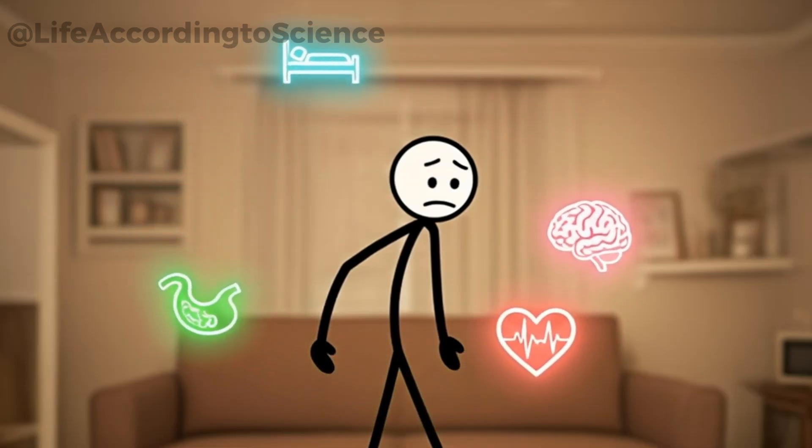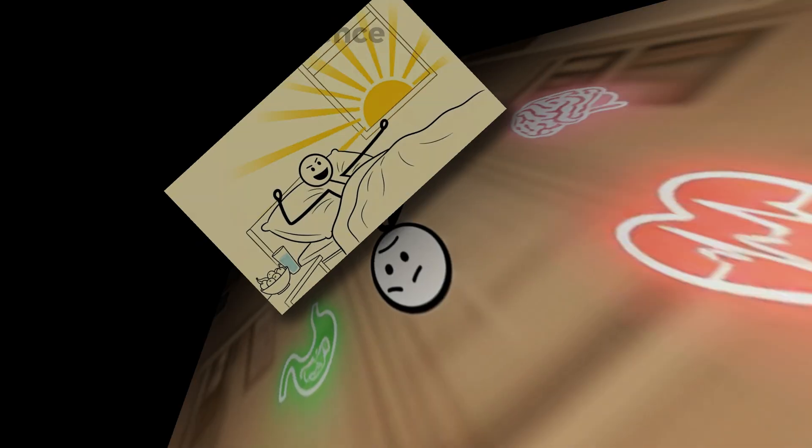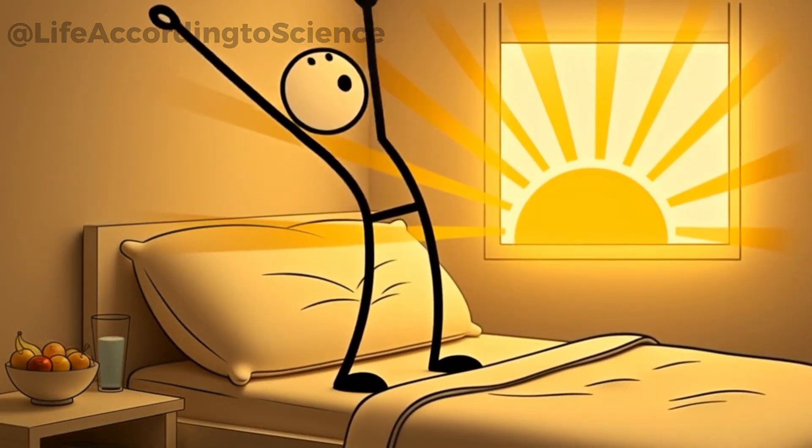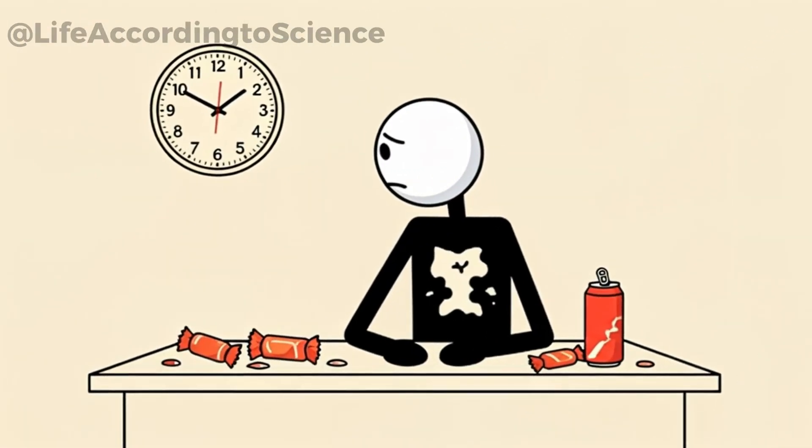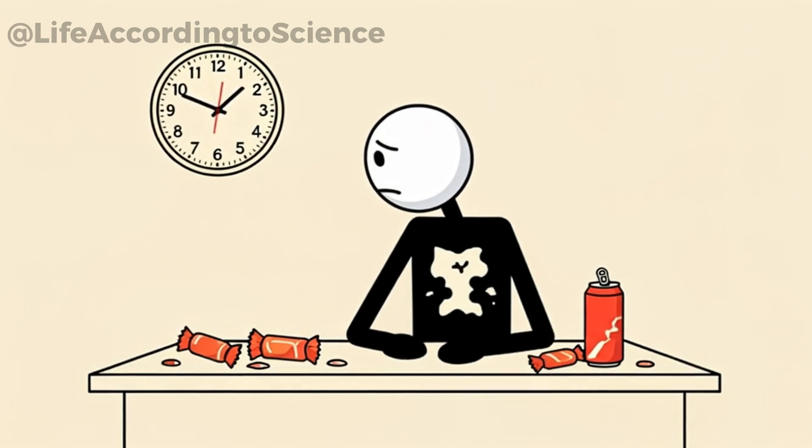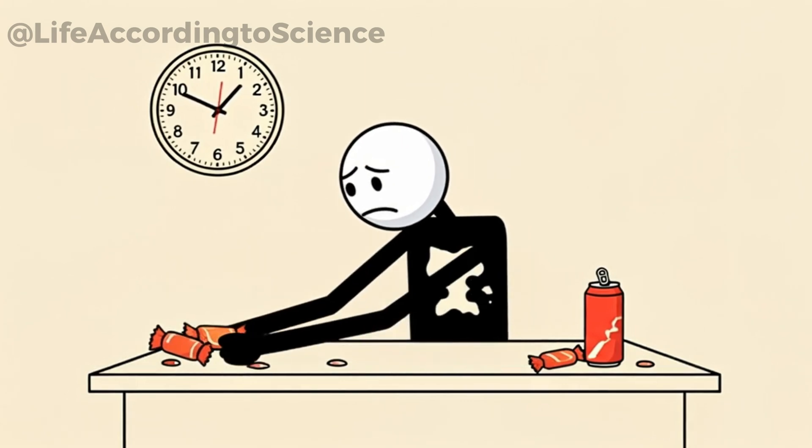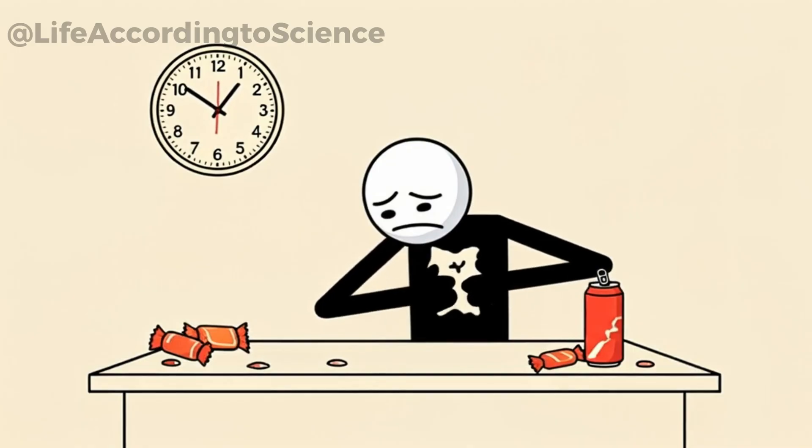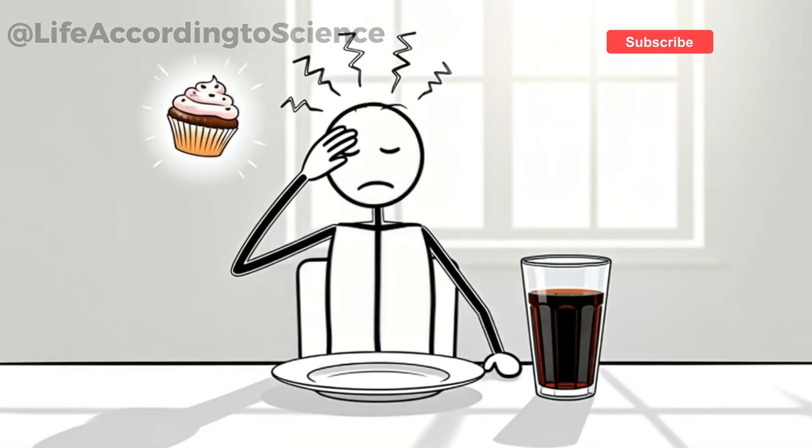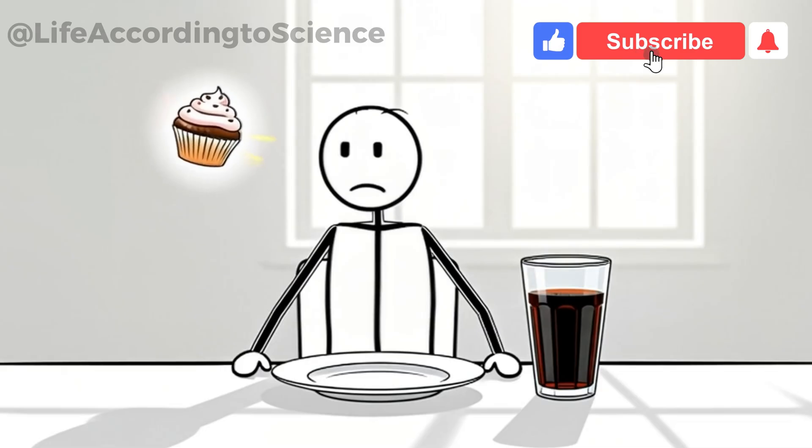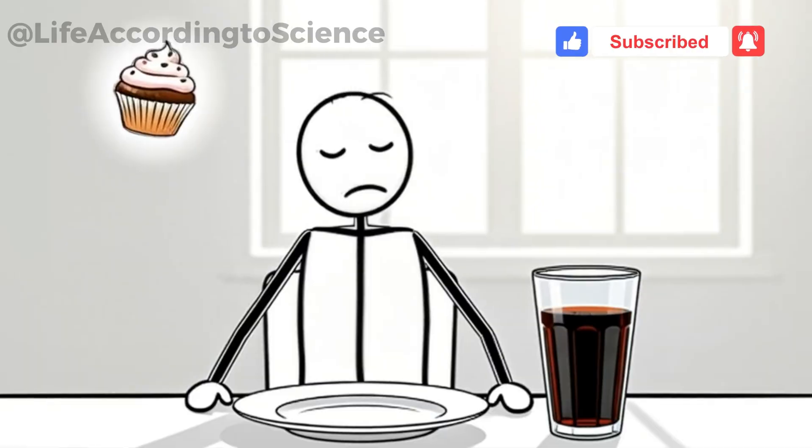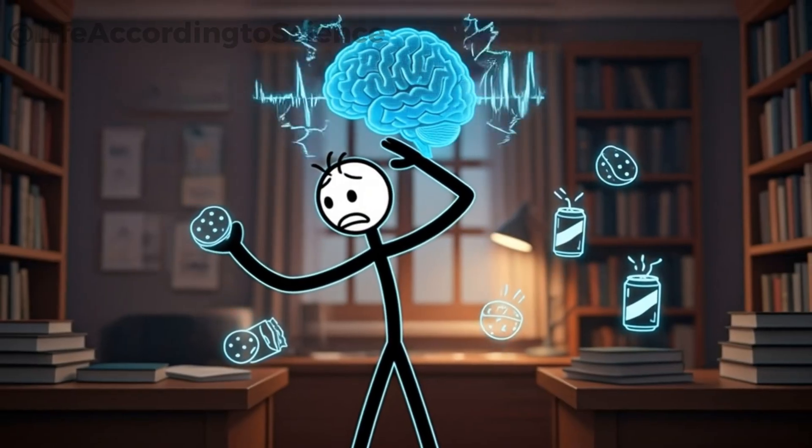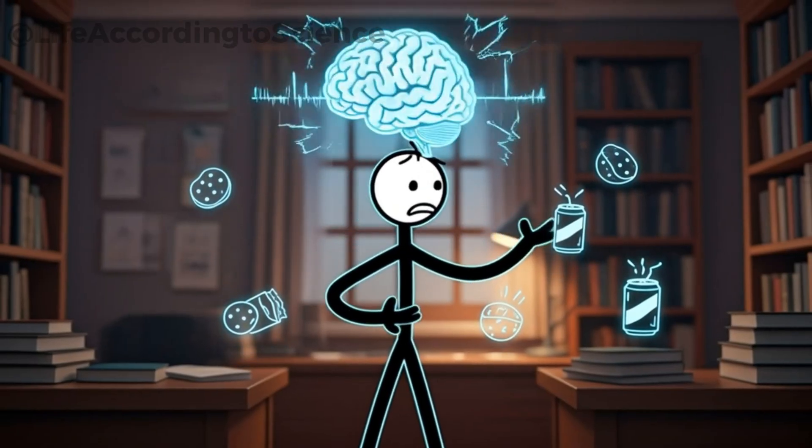The very first day without sugar might feel deceptively easy. You may wake up motivated, full of determination, convinced that cutting sugar will be a smooth journey. But as the hours pass, your body begins to realize something is missing. Sugar, which has been quietly fueling countless processes inside you, is suddenly gone. By lunchtime, some people start noticing small signs of withdrawal. Mild headaches, irritability, or a nagging craving for something sweet. Your brain, so used to quick sugar spikes, keeps sending signals for that familiar dopamine hit.